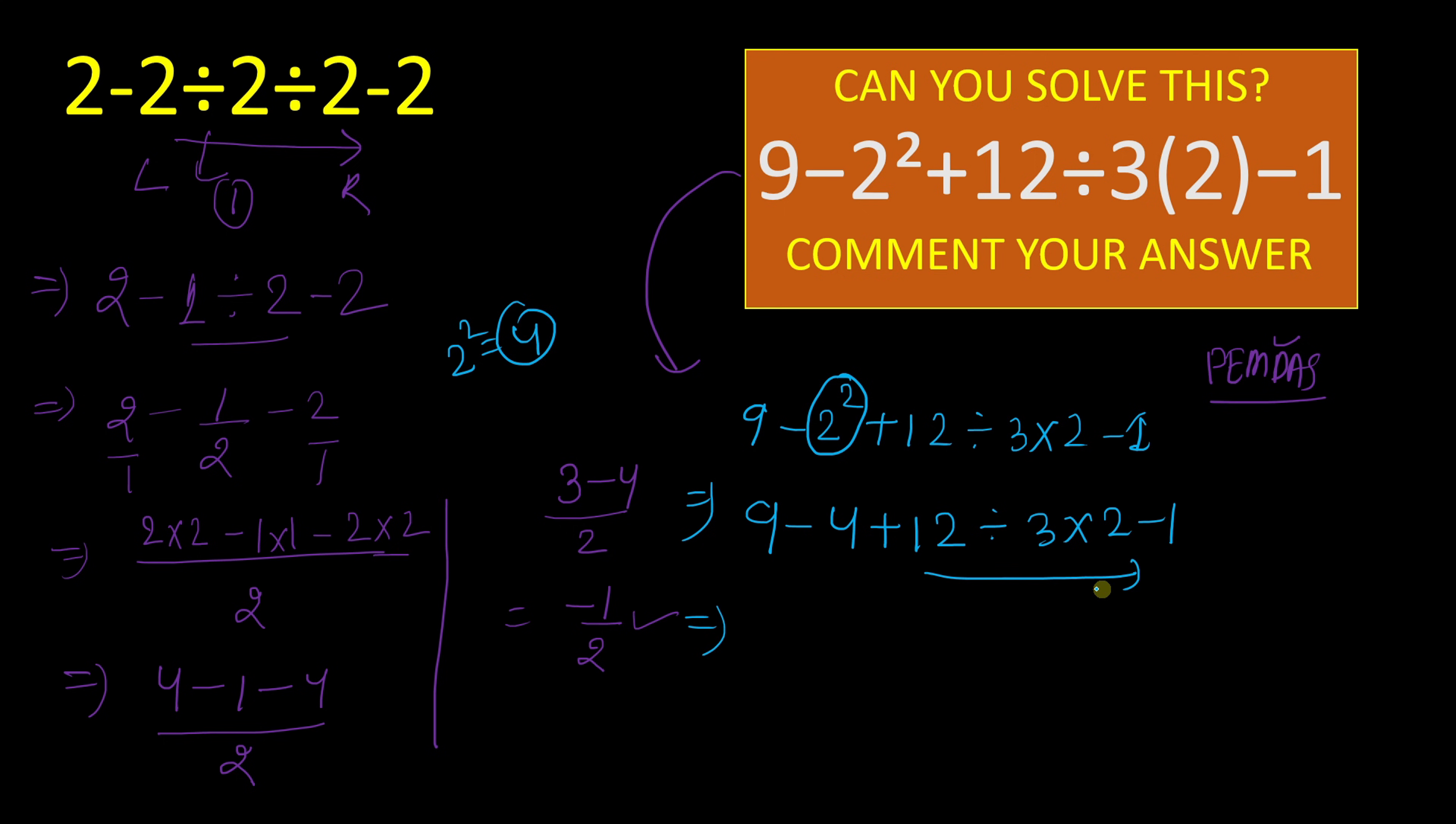Now we will go for this part. This multiplication division has the same priority. And we will go for this division part first. 12 divided by 3 will give result 4. And we will write 9 minus 4 plus 4 times 2 minus 1. And again go for this multiplication. 9 minus 4 plus 4 times 2 that is equal to 8 minus 1.